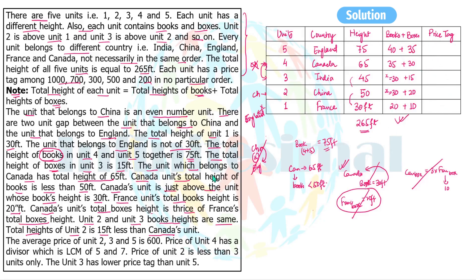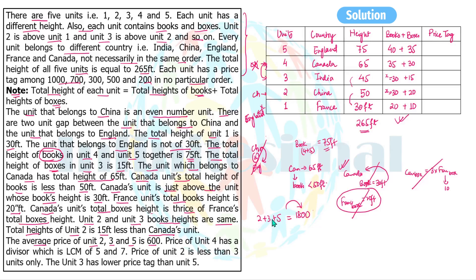Now let's fill in the price tags. The average price of units two, three, and five is 600, so their total is 1800. The price of unit four has a divisor which is the LCM of seven and five — that's 35. So unit four's price must be a multiple of 35. Among the given price options (200, 300, 400, 500, 700, 1000), only 700 is a multiple of 35. So unit four's price is 700.